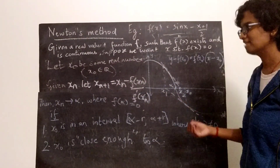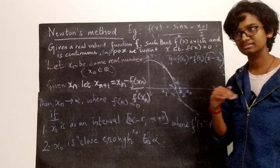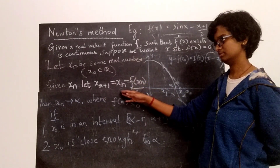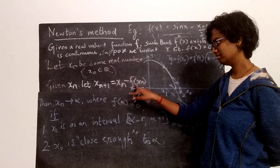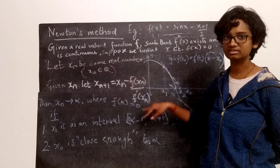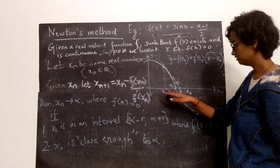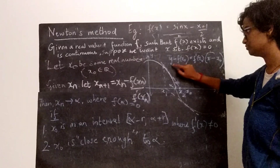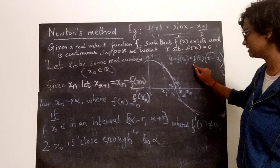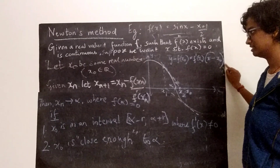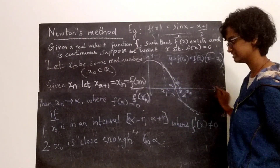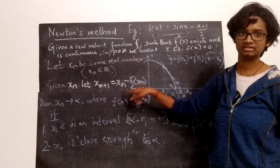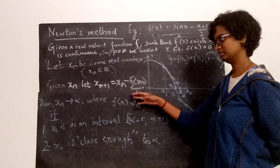Given any n, if you have xn and the tangent at xn is not horizontal, then you get xn+1. The formula is: xn+1 = xn − f(xn) / f′(xn). This comes from finding where the tangent line cuts the x-axis. The equation of the tangent at x0 is y − f(x0) = f′(x0)(x − x0). Setting y = 0 and solving for x gives xn+1 for general n.